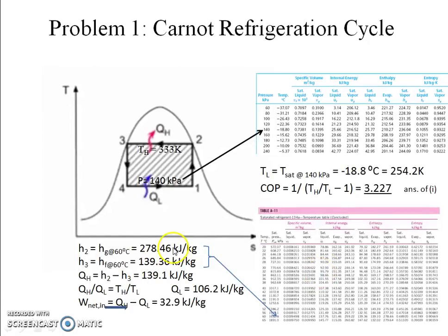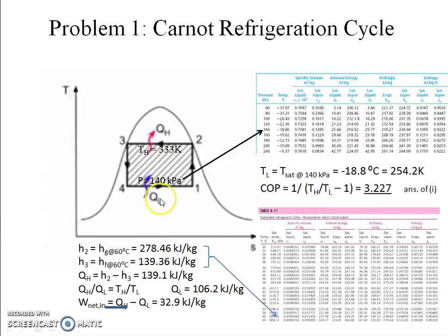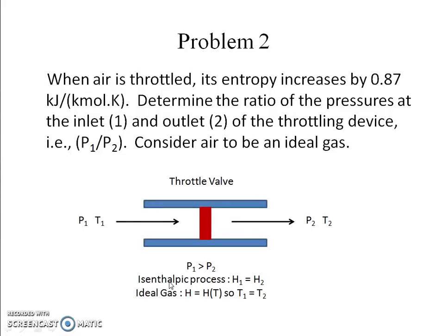For the net work input, we apply the first law to the overall cycle. Since it is a refrigeration cycle, work must be done to extract heat from the low-temperature reservoir and reject it to the high-temperature reservoir. For a cyclic process, ΔU = 0, so W_in = Q_H − Q_L, which gives a net work input of 32.9 kJ/kg.